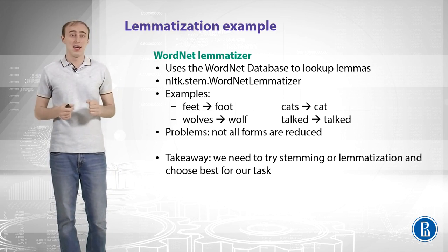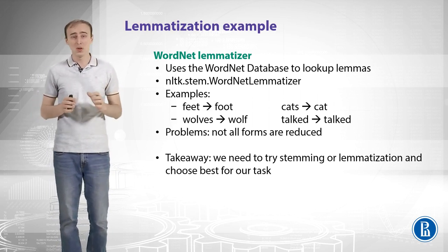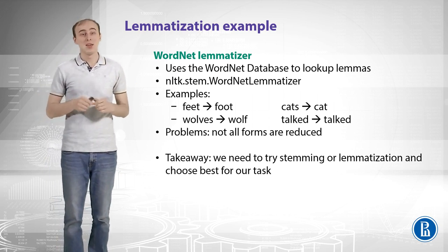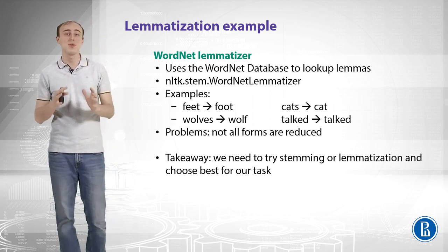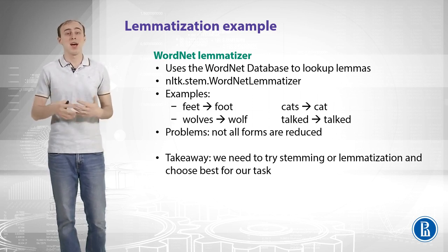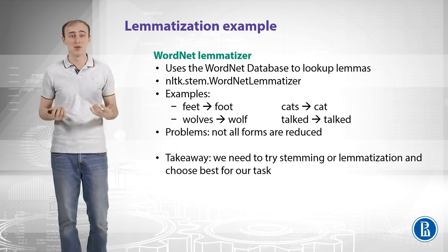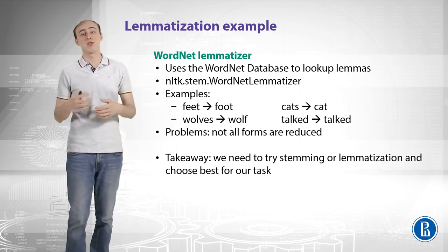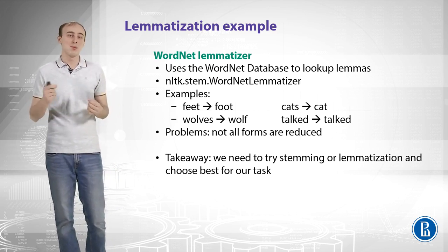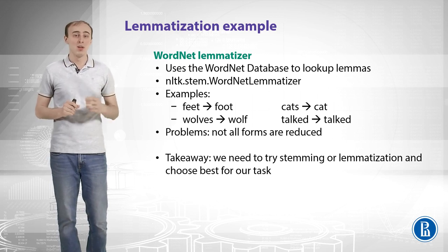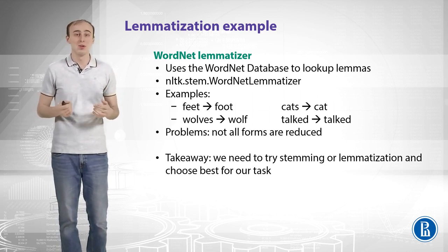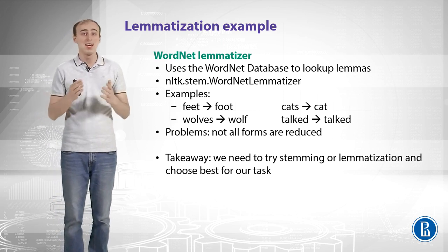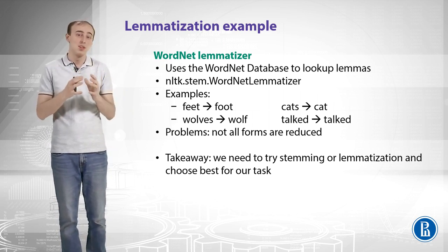For lemmatization, you can use the WordNet lemmatizer in NLTK, which uses the WordNet database to look up lemmas. This time 'feet' is successfully reduced to 'foot' because the database knows about English irregular forms. 'Wolves' becomes 'wolf', 'cats' becomes 'cat', but 'talked' stays as 'talked' — nothing changes for that verb form. The problem is that the lemmatizer doesn't reduce all forms: for nouns the lemma is typically the singular, but for verbs it may not merge tokens that have the same meaning.